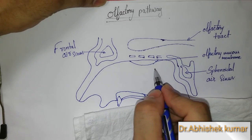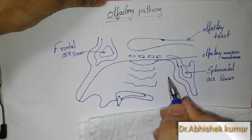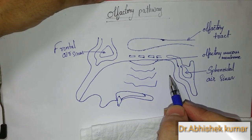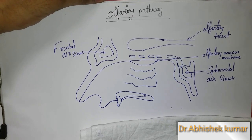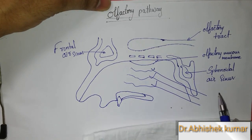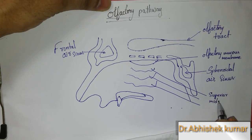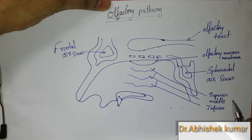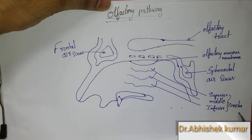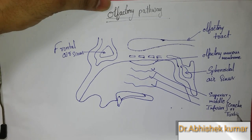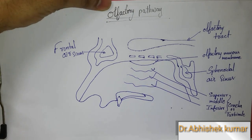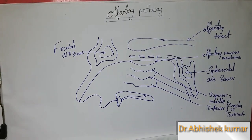Here three zigzag lines are present. The upper one is superior, the middle one is middle, and the lower one is inferior. Together these are called the superior concha, middle concha, and inferior concha — also known as turbinates.